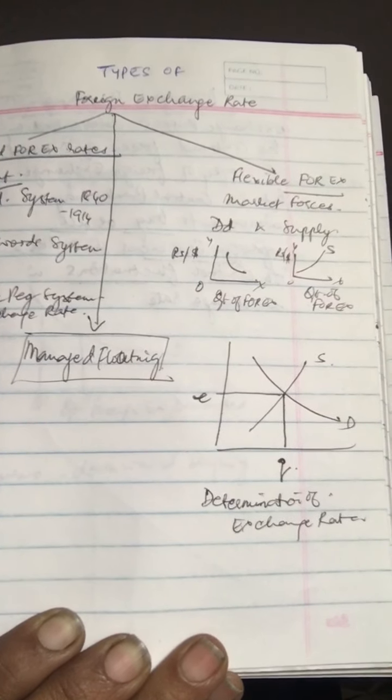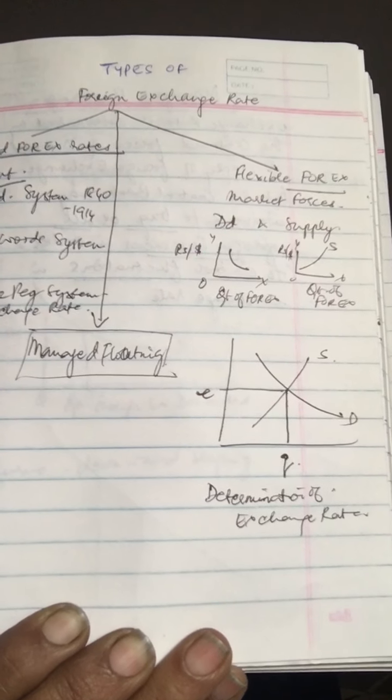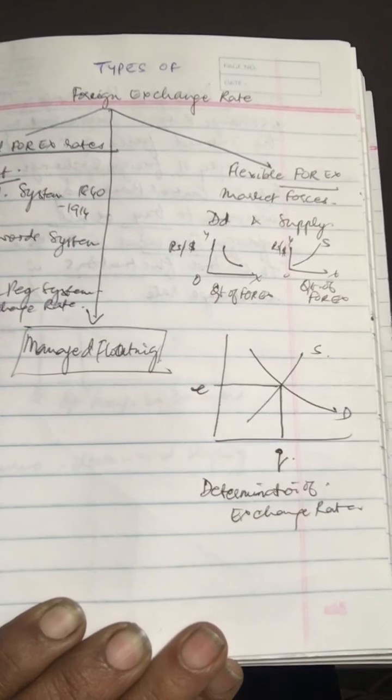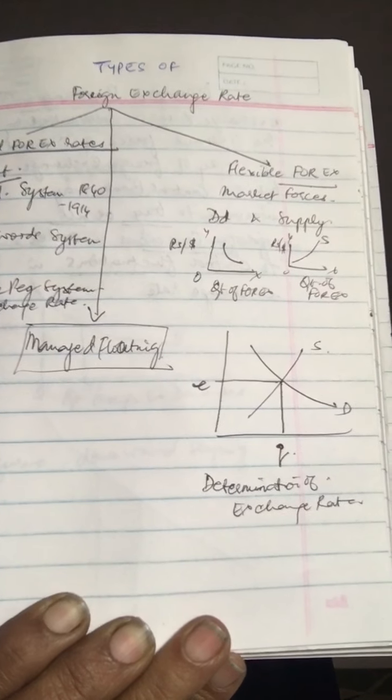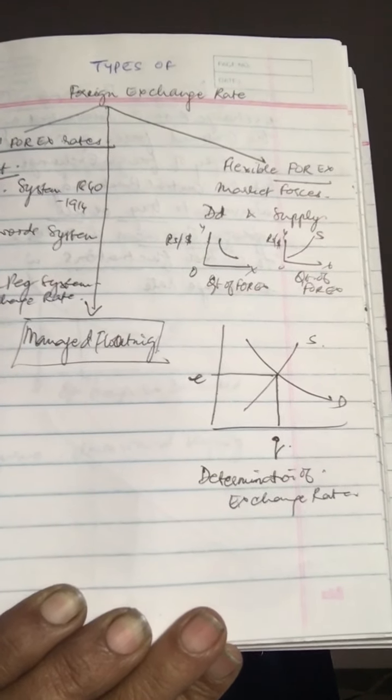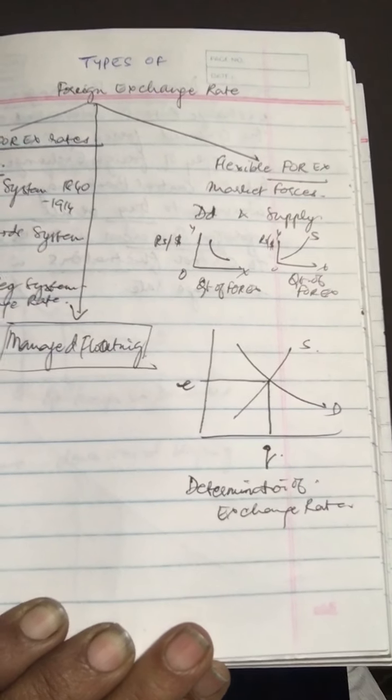Under Bretton Woods system, exchange rates were fixed; however, some adjustments within a certain limit was allowed. That is why the system is sometimes called the adjustable peg system of exchange rate.